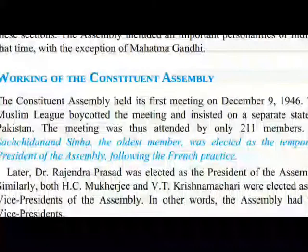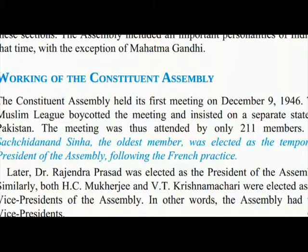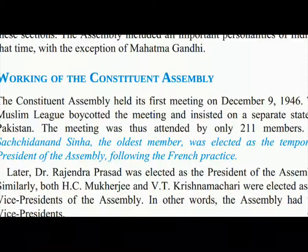Working of the Constituent Assembly: The Constituent Assembly held its first meeting on December 9, 1946. The Muslim League boycotted the meeting and insisted on a separate state of Pakistan. The meeting was thus attended by only 211 members. Dr. Sachchidanand Sinha, the oldest member, was elected as the temporary president of the assembly, following the French practice.